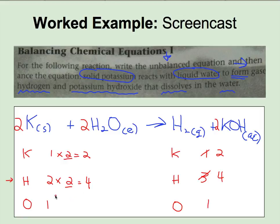Now let's go through and count the oxygens. We have now two oxygens on the left. And because of this coefficient, we have two oxygens on the right. So this reaction is now balanced. Two potassiums, two potassiums, four hydrogens, four hydrogens, two oxygens, two oxygens.